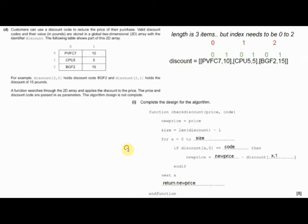If discount[x][0] - x starts at 0 - so we're saying discount[0][0] which is PVFC7. And it's saying if that is equal to the code that was brought in as a parameter to the subprogram, if it's equal to this one, then do this. Otherwise go through the for loop again. x is going to equal 1. So now we go to discount[1][0] - because 0 doesn't change, we're always just looking at 0. So now we're looking at CPU5, and just checking: is that the code they sent through? Let's say they sent BGF2, so no, it wouldn't be.